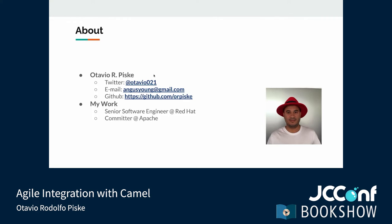I help Red Hat use Apache Camel projects to develop our integration products. I have been working mostly upstream as a committer in the Apache Camel project. In the Apache community, I work mainly with CamelCore, CamelK, and the Camel Kafka Connector projects — helping with features, performance improvements, and bug fixes.